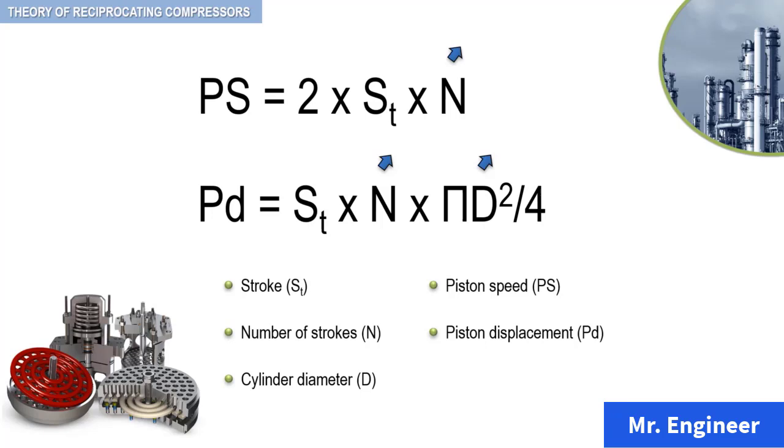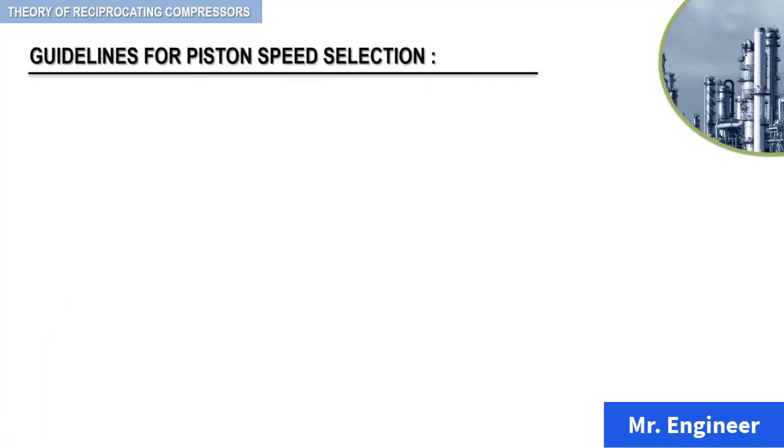So, given all of these issues, it would seem very difficult to select a piston speed. For someone without previous experience on a reciprocating compressor, the following guidelines can be used as a starting point. The values that we are going to show you here apply to the industrial process type of compressor with a double-acting cylinder construction.